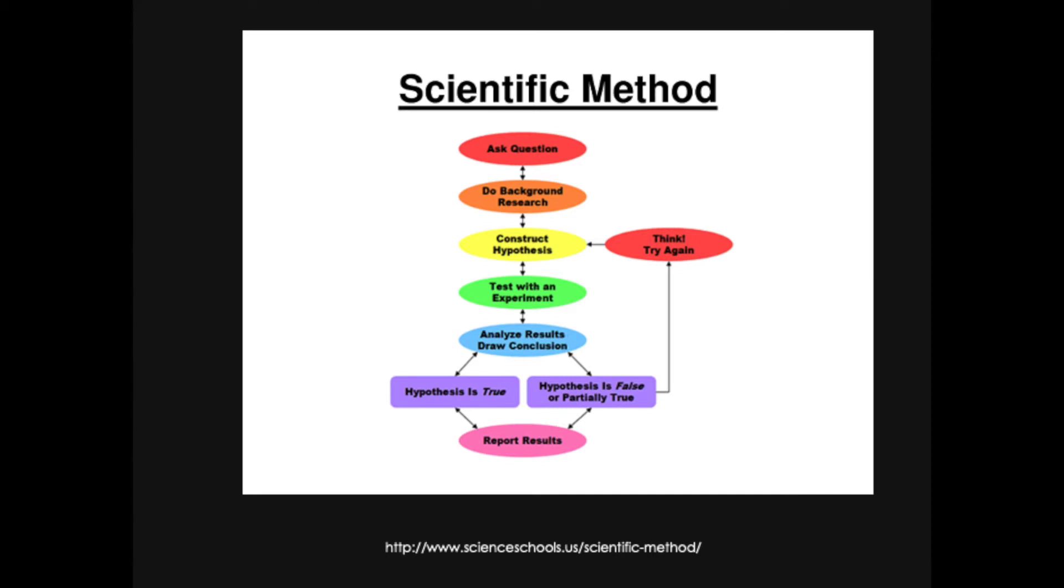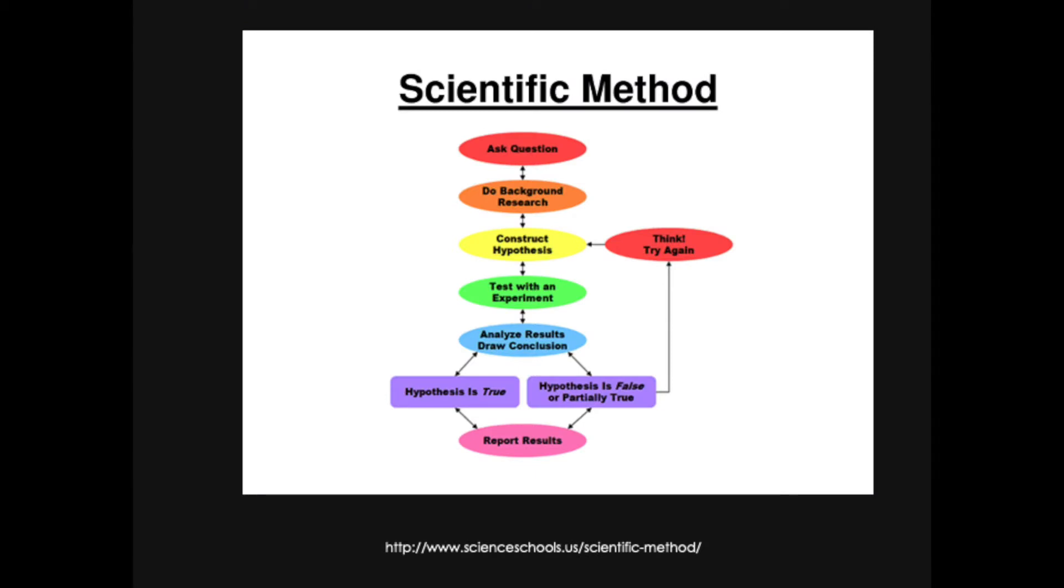Now this conclusion will either support your hypothesis or it will not support your hypothesis. So you can say the hypothesis is true or correct, or it is not correct. If the hypothesis is not correct then we have this loop where you go back and you rethink the hypothesis, you change it with your new knowledge that you have, and then you test it again, you analyze the results again. Once you have an answer it's time to report the results.